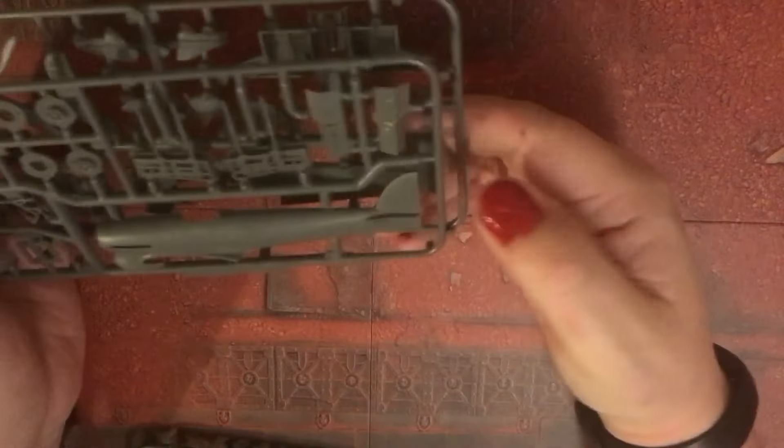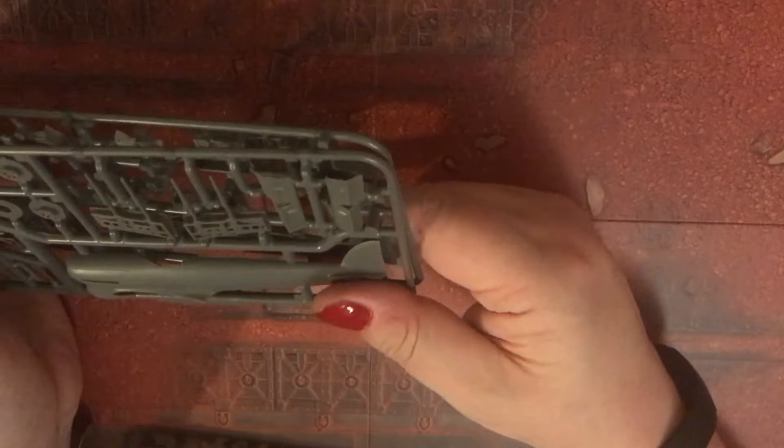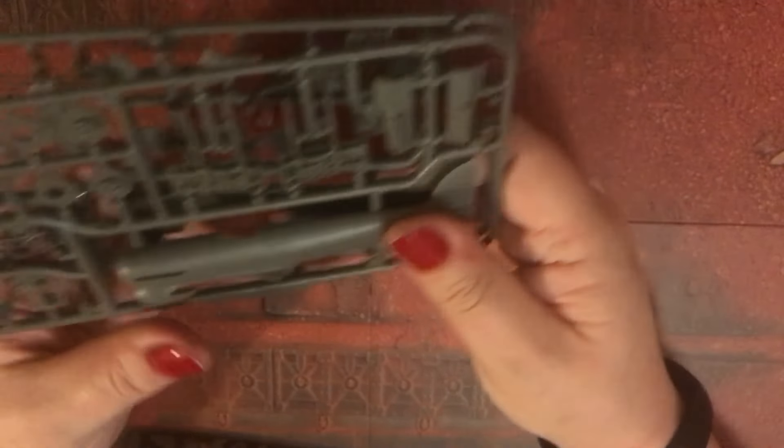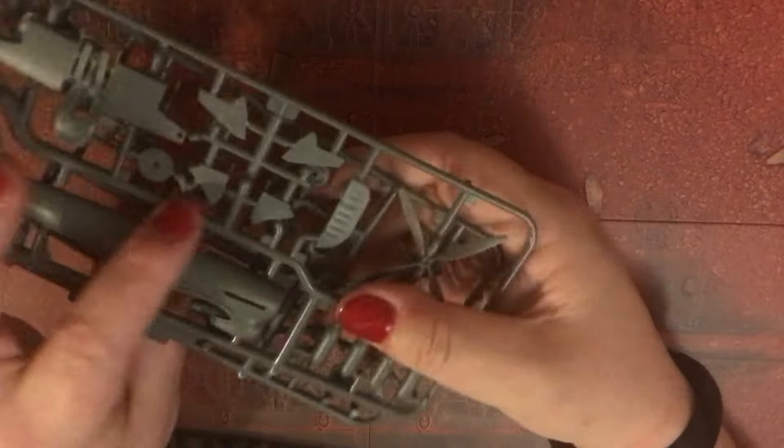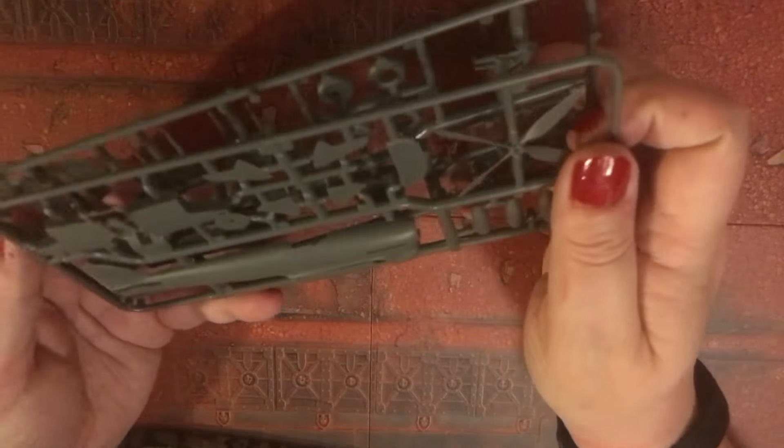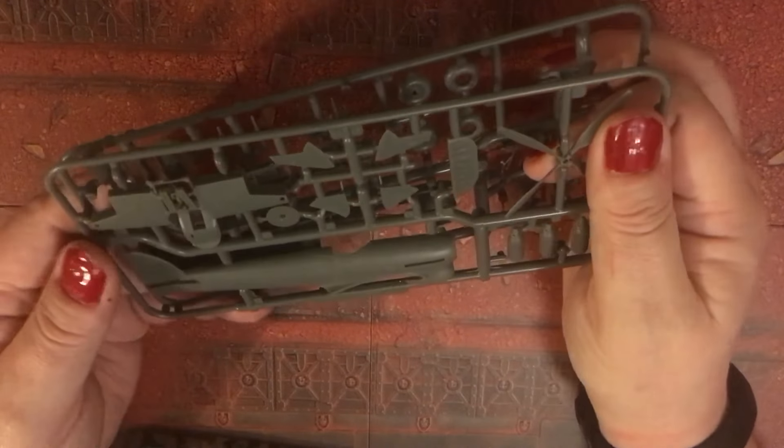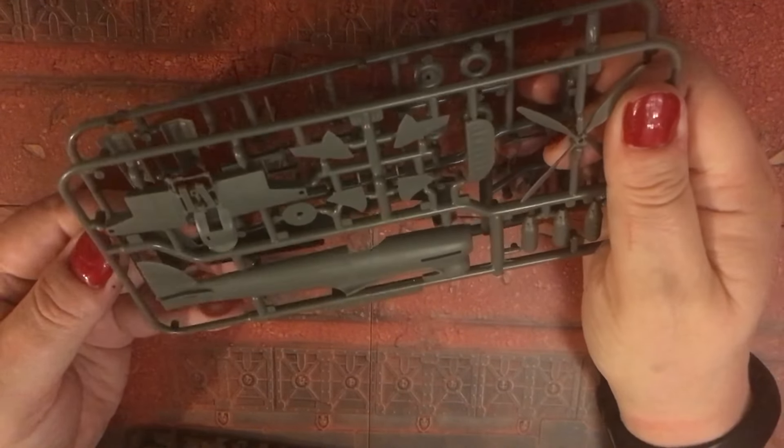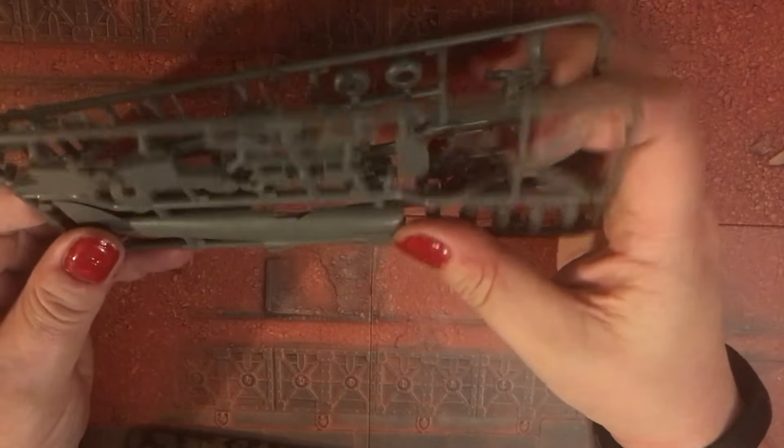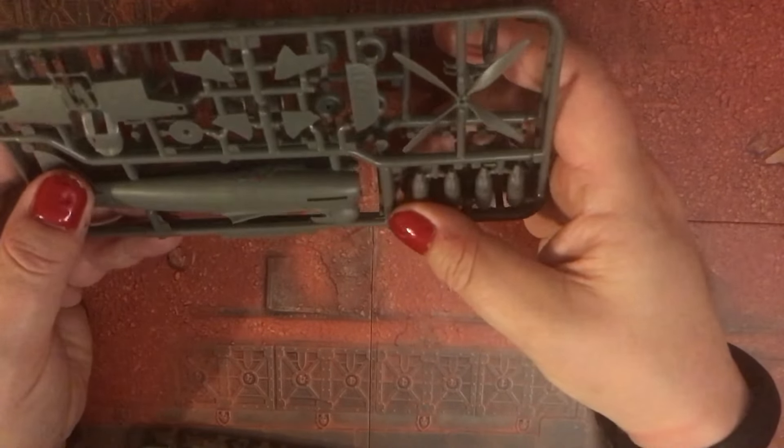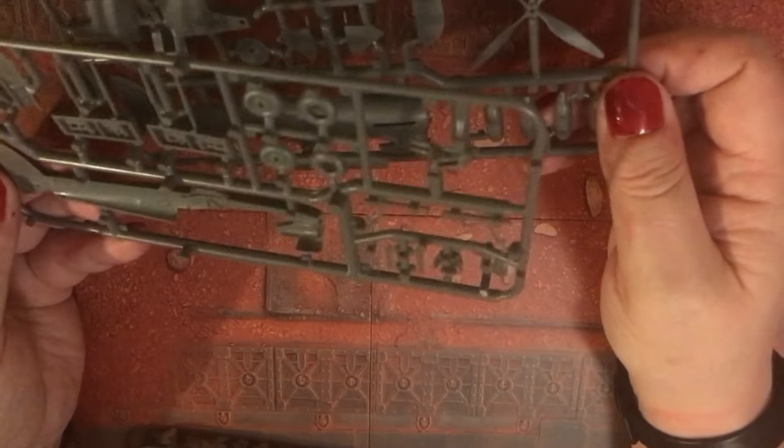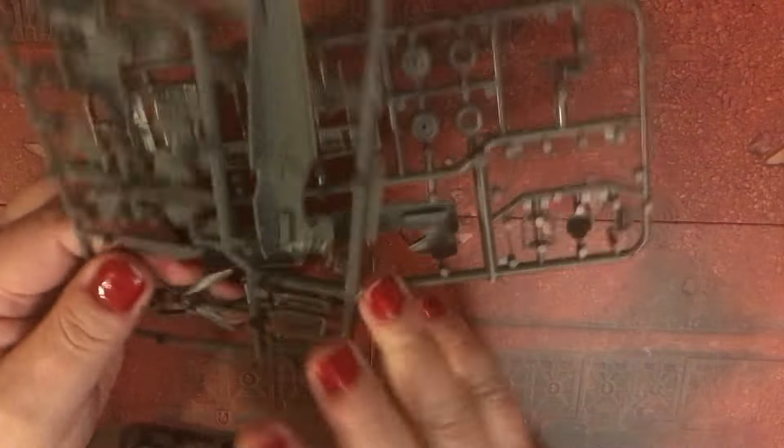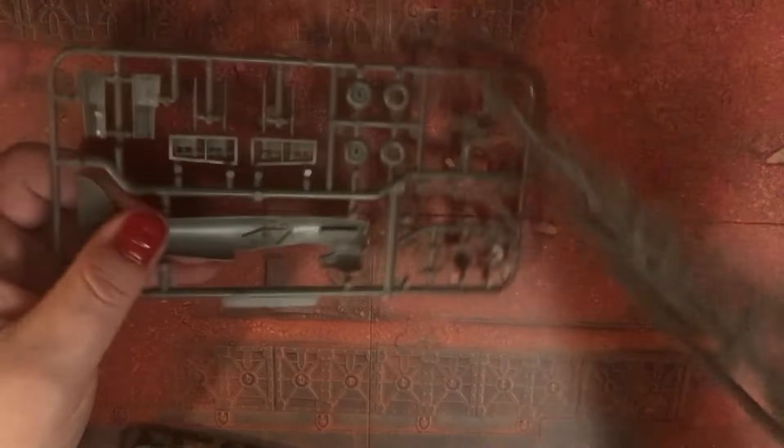And the fuselage, yeah I mean this is, I've never built a Typhoon before but yeah that's a chunky monkey to say the least. It was supposed to be kind of like a heavy fighter but it didn't perform well but they found a use for it in ground attack essentially. Some nice interior detail on the sides of the fuselage as well.